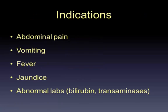Reasons you would do a gallbladder ultrasound: abdominal pain is by far the most common, but sometimes patients may present solely with vomiting, or have a fever without good explanation — especially patients with neurologic dysfunction like dementia or aphasia. A patient who's jaundiced without explanation, or you've gotten labs back with elevated bilirubin or transaminases, are also good reasons to do an ultrasound to rule in or out something and focus your differential.